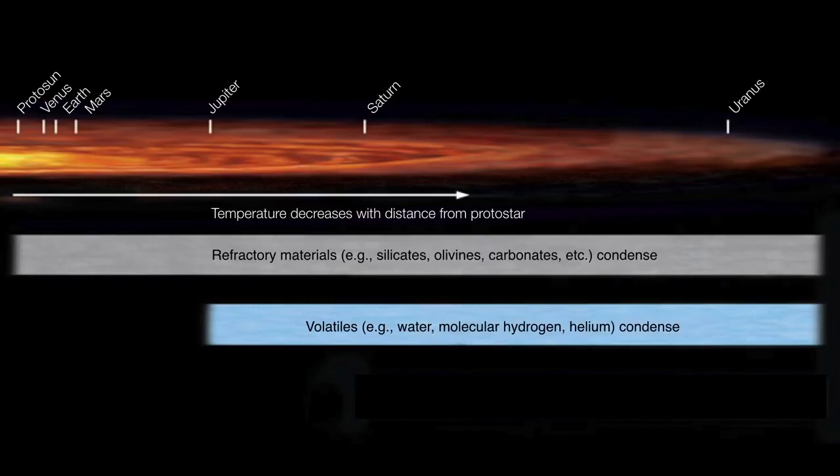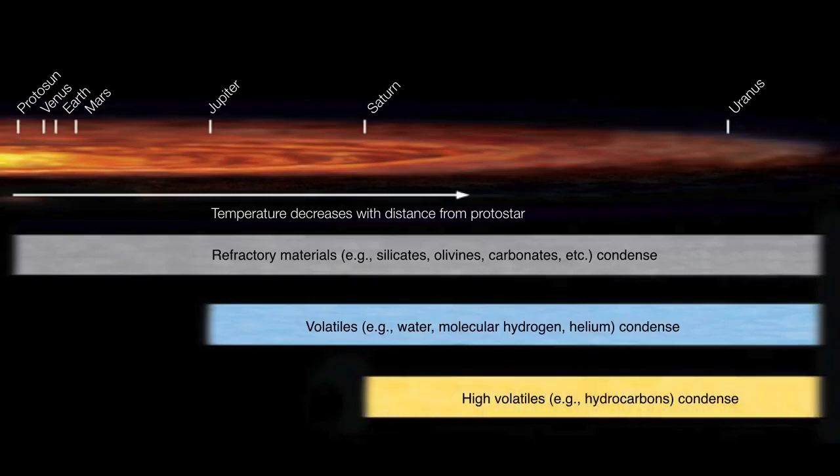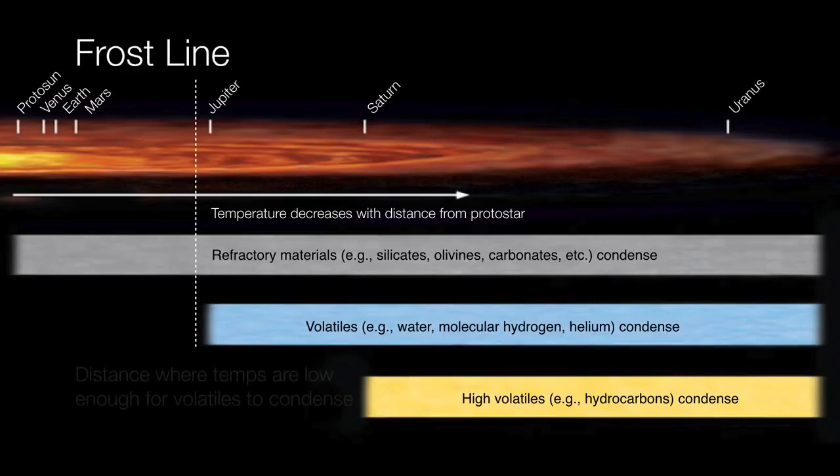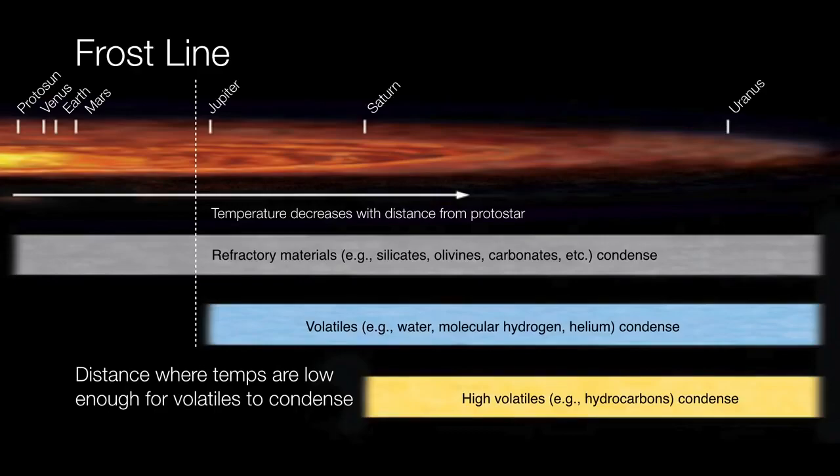They become solid enough or at least slushy enough in order to fully condense. And in fact, once you get out past the orbit of Saturn, the temperatures are low enough to even allow high volatiles, such as hydrocarbons, methane, ammonia, and so forth, to start to condense. So the point where the temperatures drop low enough is called the frost line. It's really just the distance where the temperatures are low enough for volatiles to condense.